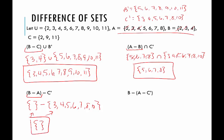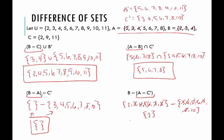Does the associative property hold? My guess is no, but let's find out. We start with the difference of A and C complement. A is 2, 3, 4, 5, 6, 7, 8, and C complement is 3, 4, 5, 6, 7, 8, and 10 — so everything except 2 gets removed, leaving just 2. Now the difference of B and that set containing 2: B is 2, 3, and 4, and removing 2 gives us 3 and 4. So the answer is the set containing 3 and 4 — not the same as the empty set.